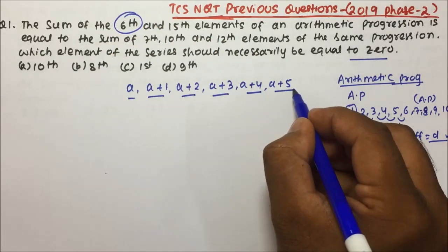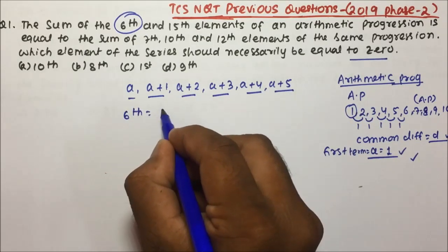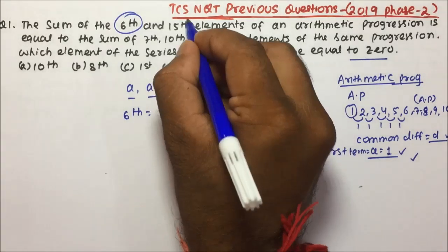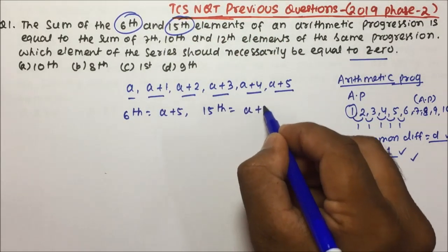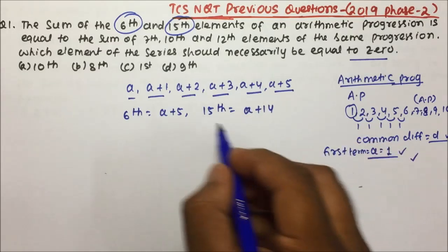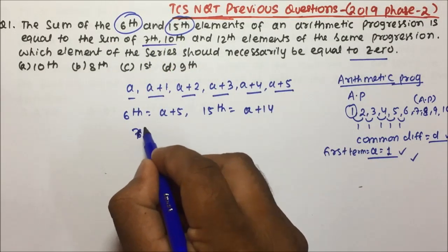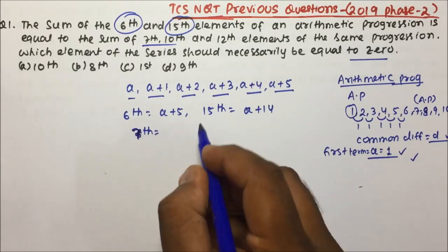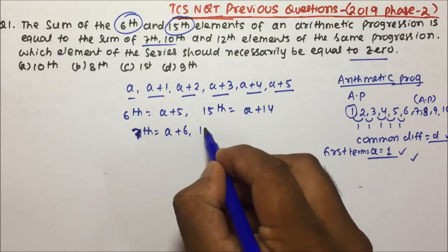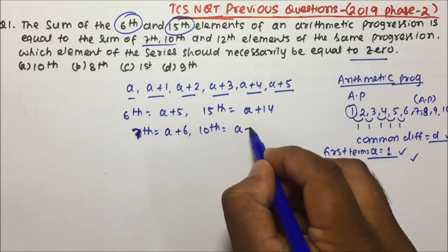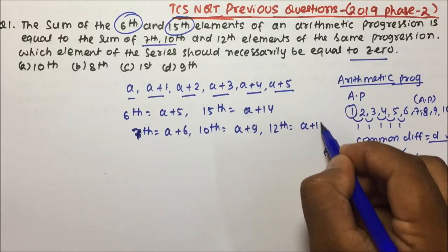The 6th term is a+5, and the 15th term will be a+14. If we talk about the 7th, 10th, and 12th terms: the 7th term is a+6, the 10th term is a+9, and the 12th term is a+11.